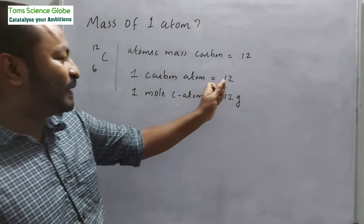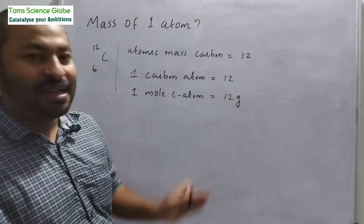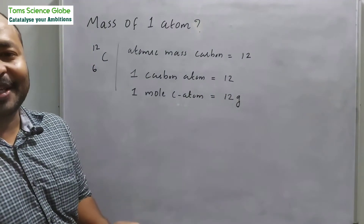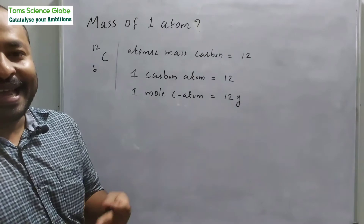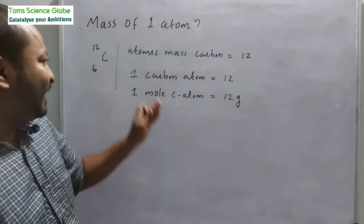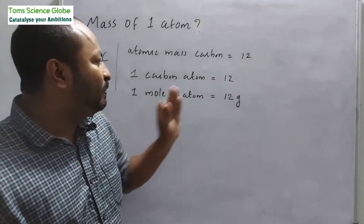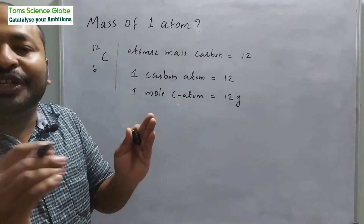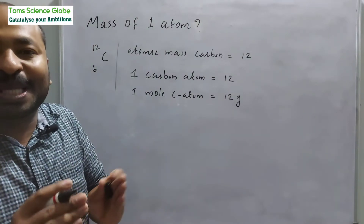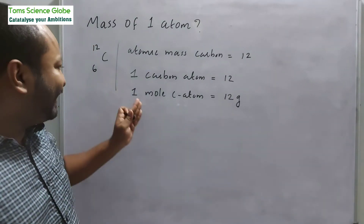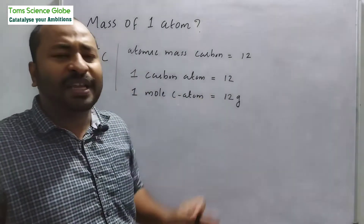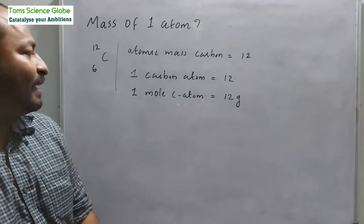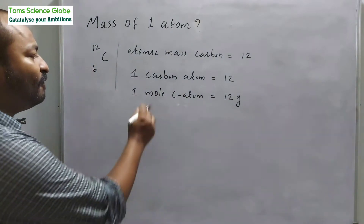Atomic mass expressed in grams — that is what we call gram atomic mass. So if the atomic mass of carbon is 12, then one mole of carbon atoms is 12 grams.